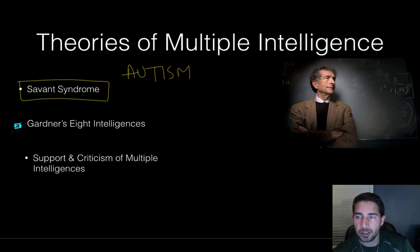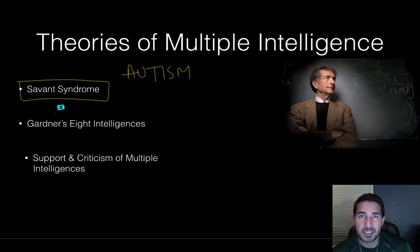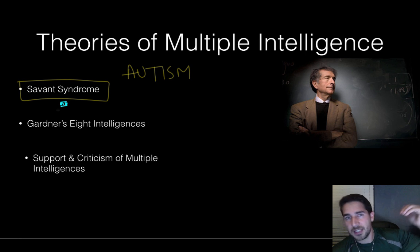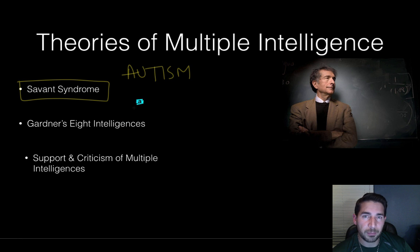They wanted to expand it beyond numerical ability, memory, and doing well in school. Research from people with brain damage showed they may lose one ability but maintain others. So if general intelligence were true, if one thing is damaged, everything should be damaged — that starting point should lower for everything. But it doesn't when you have brain damage in just one area. So Gardner is famous for his eight intelligences.